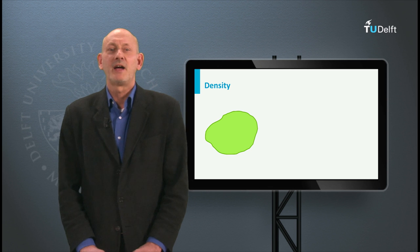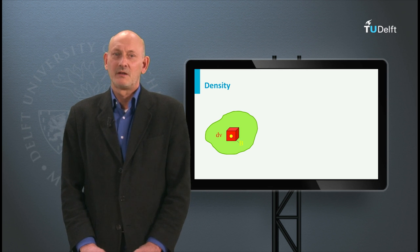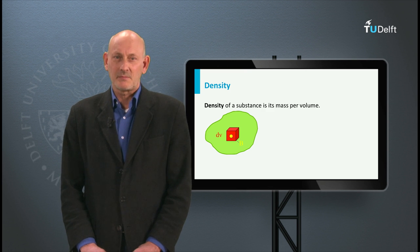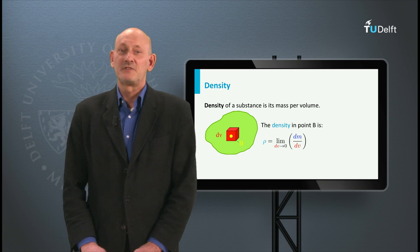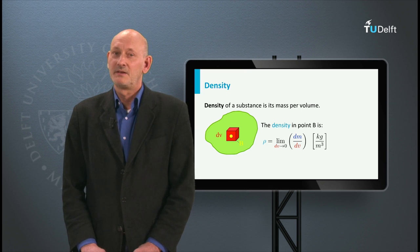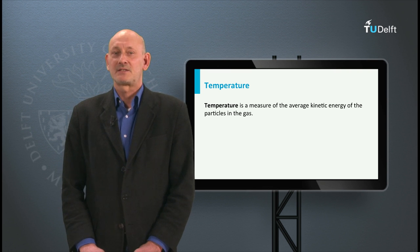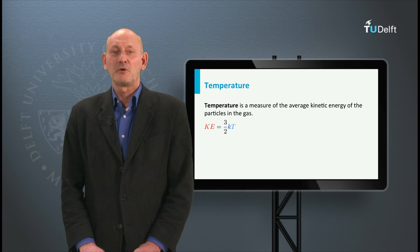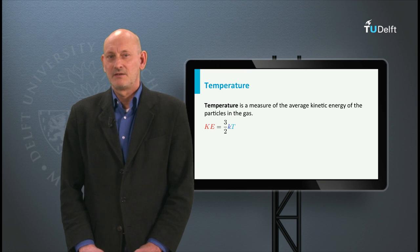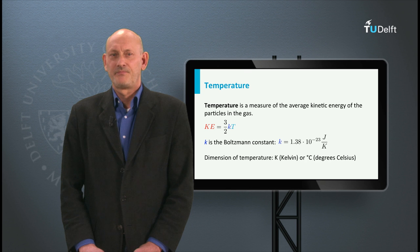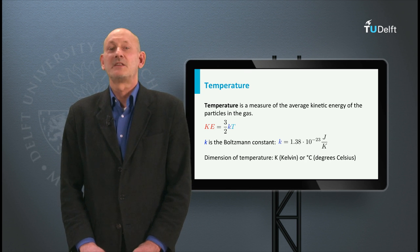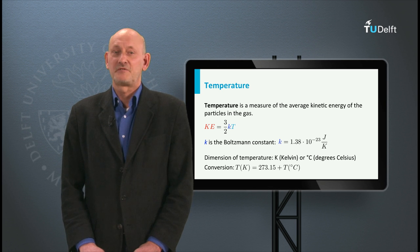Imagine we have a volume in which we define an incremental volume dV containing a point B. The mass of this volume dV is dM. The density of a substance is its mass per volume, and the density in point B is the limit of dV going to zero of dM over dV. The temperature is a measure of the average kinetic energy of the particles in a gas. This kinetic energy is given by 1.5 times K times the temperature T, where K is the Boltzmann constant. Temperature is expressed in Kelvin or degrees Celsius; zero degrees Celsius is 273.15 Kelvin.